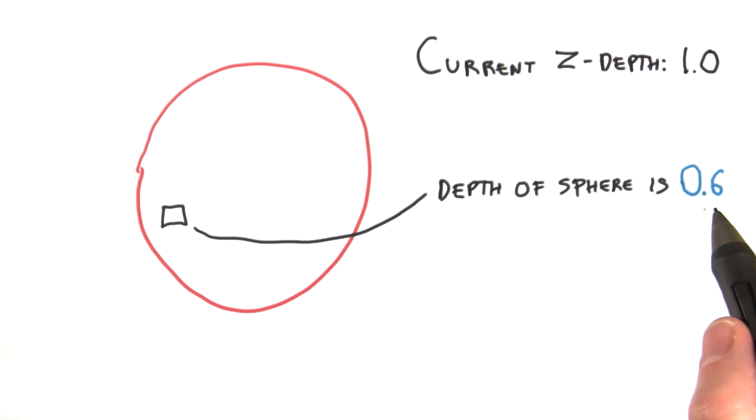So in this case, the sphere's depth is clearly closer than the maximum value you can store in the z-depth, so it's visible at this point.